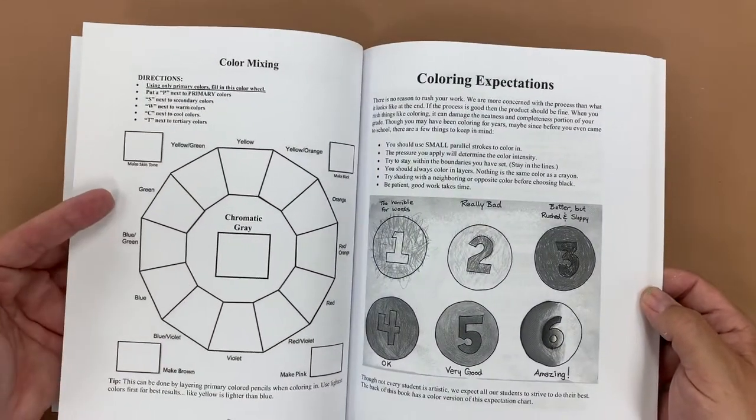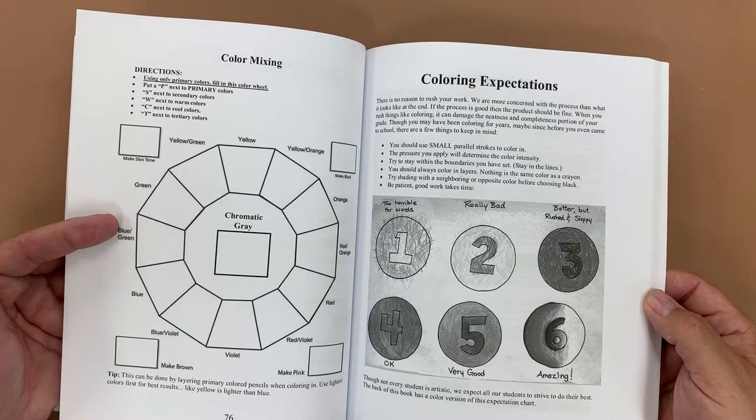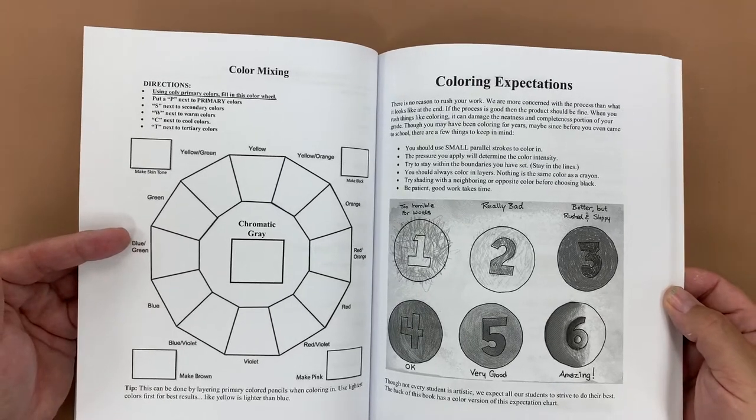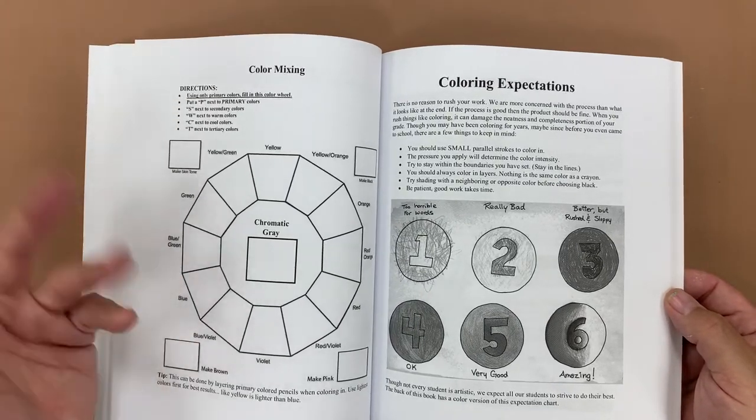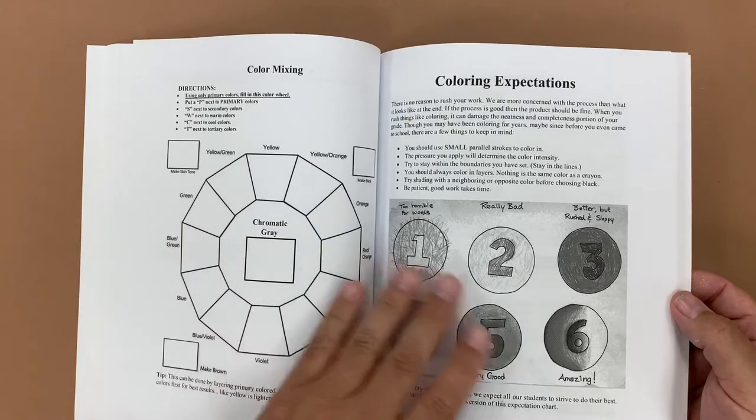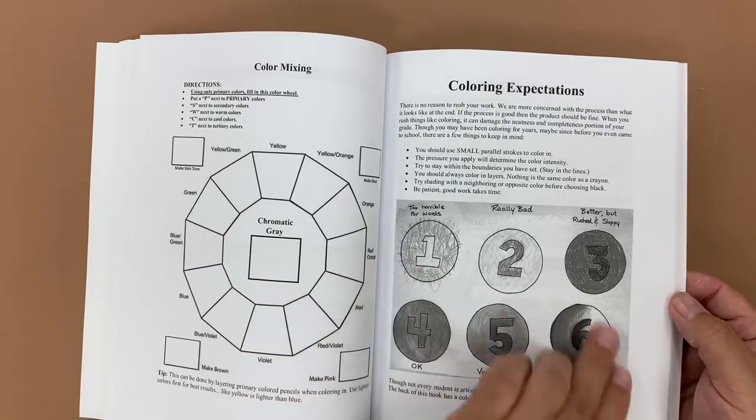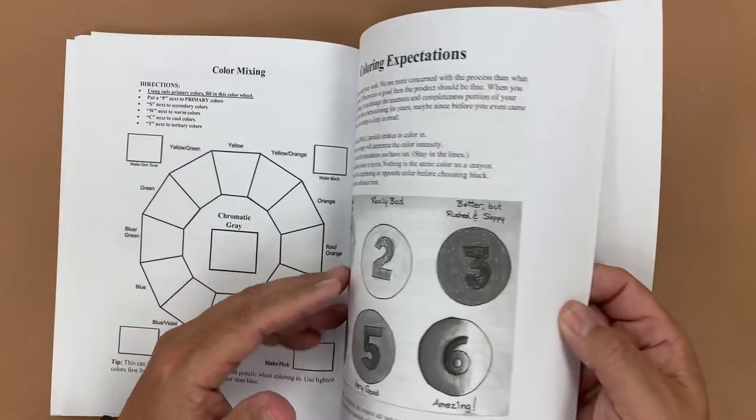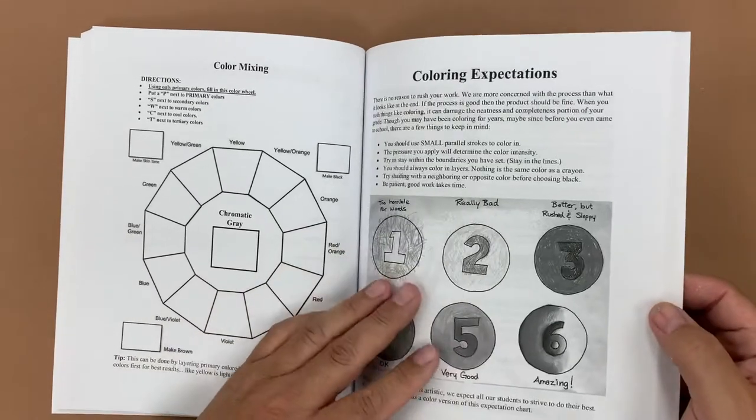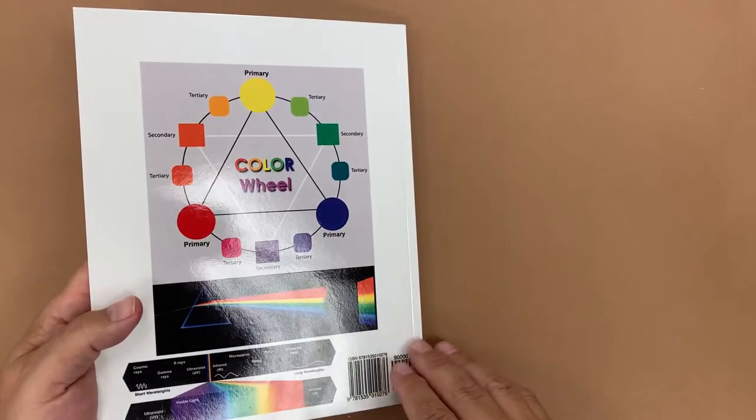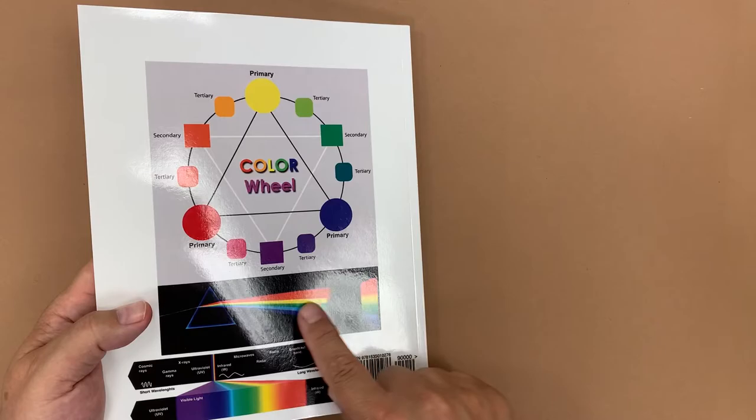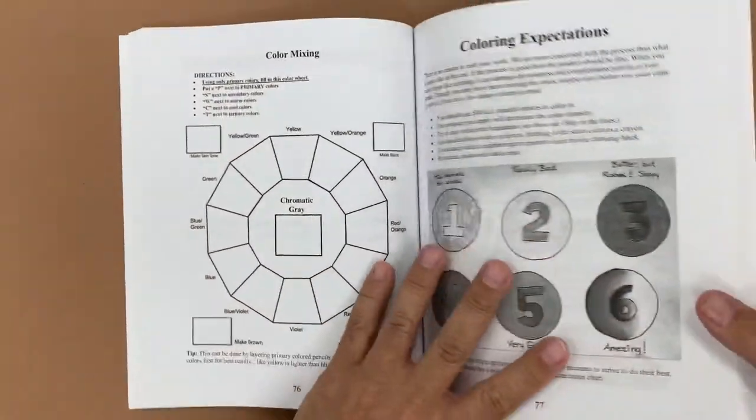We have a color wheel mixing chart. They can use colored pencils on this, or you could copy this over to heavy paper where they could do it in any other kind of media. Coloring expectations, kind of how we want the students to do on this, and you'll also see this kind of repeated in the back in color. We have our color wheel available, spectrum, and our basic information in color.